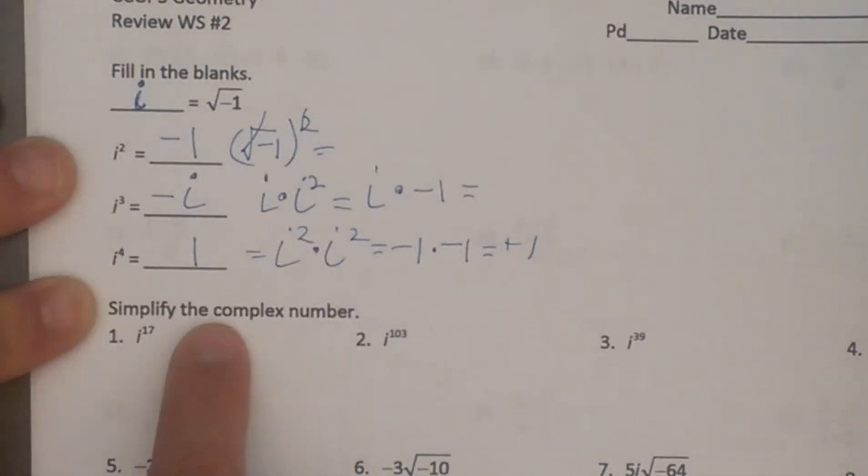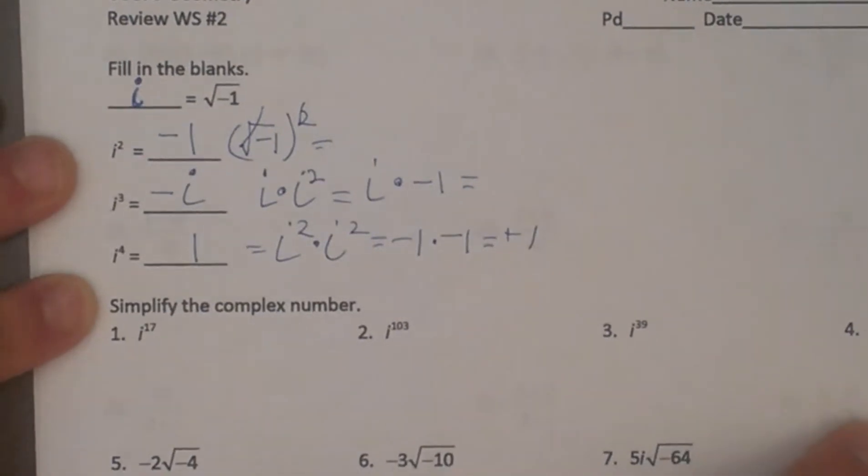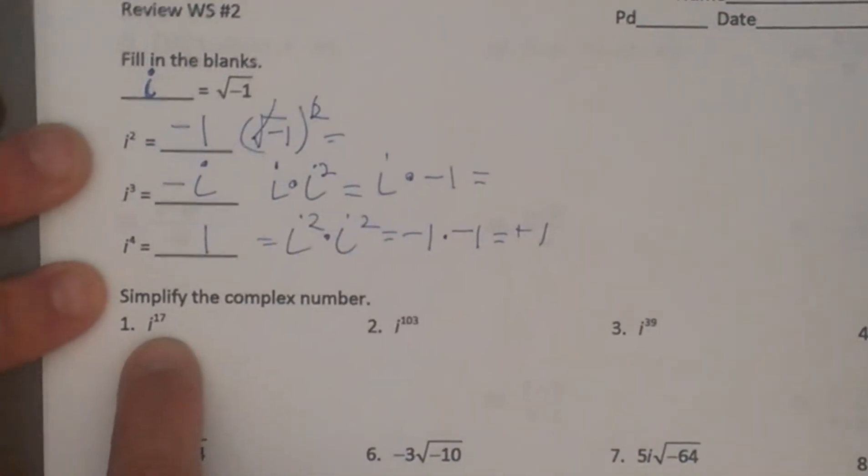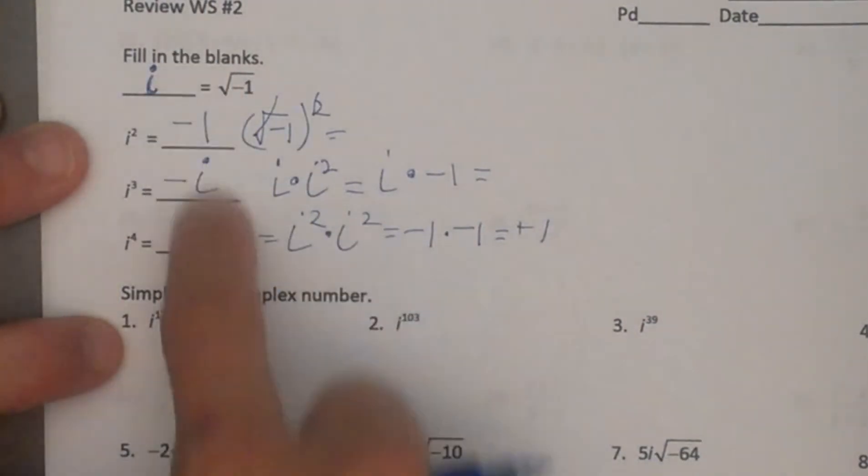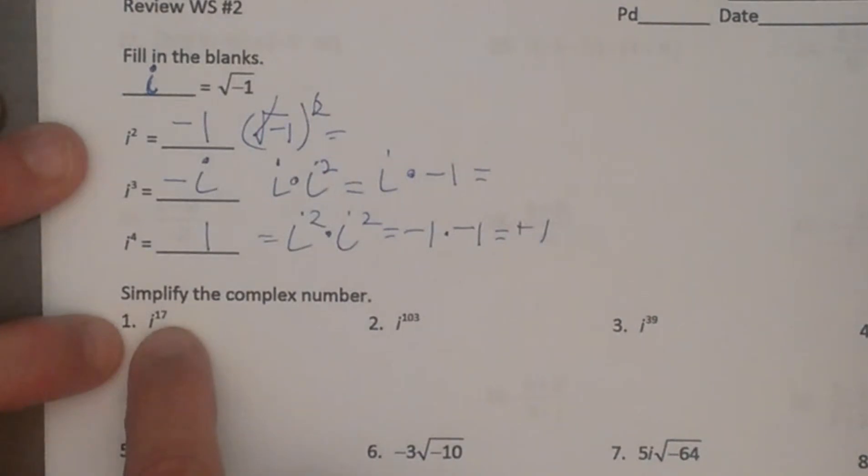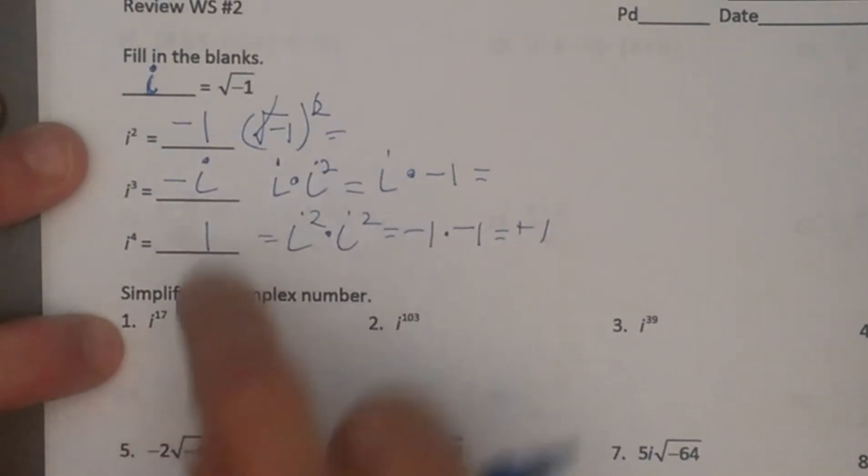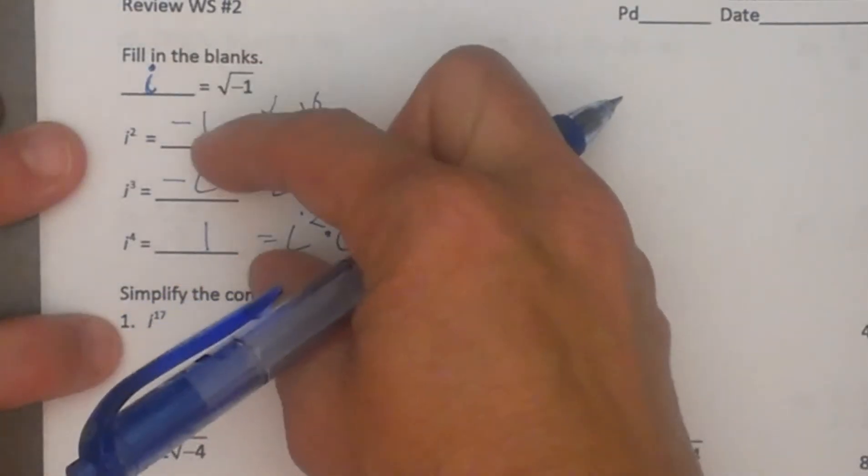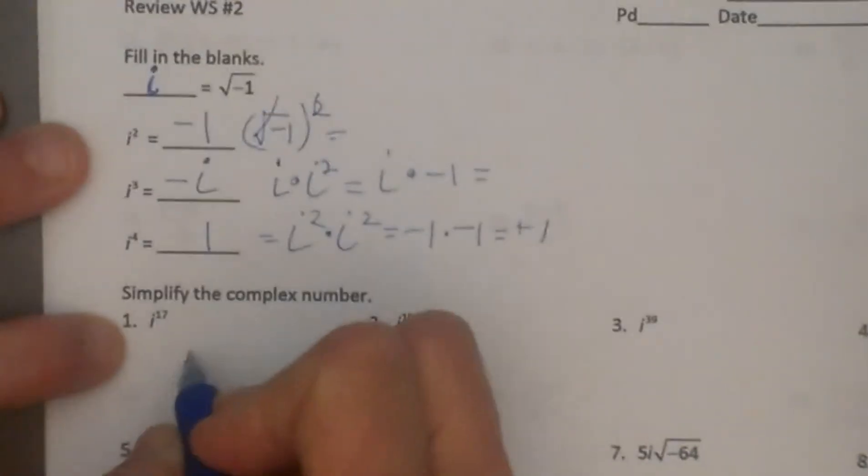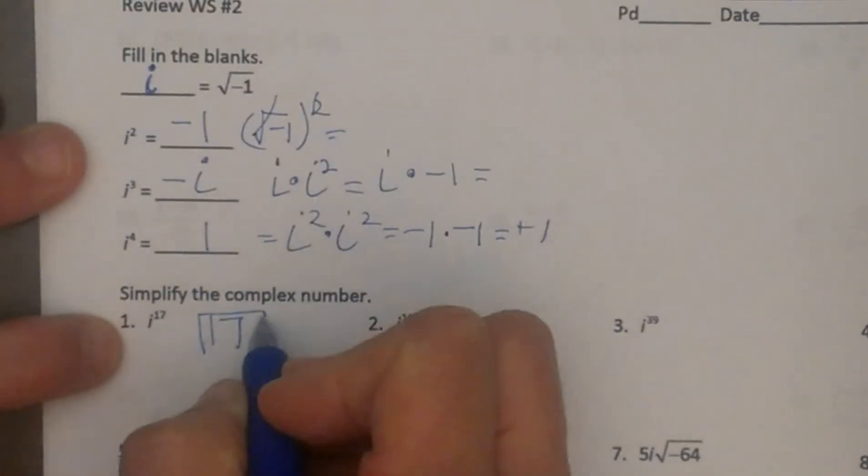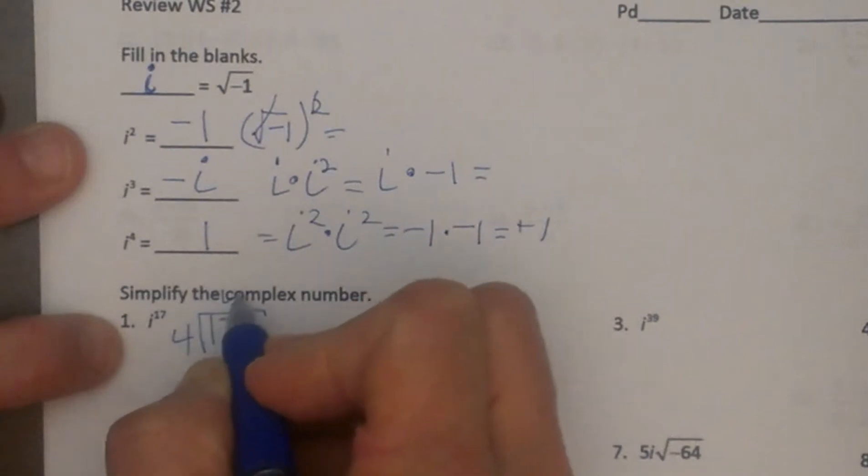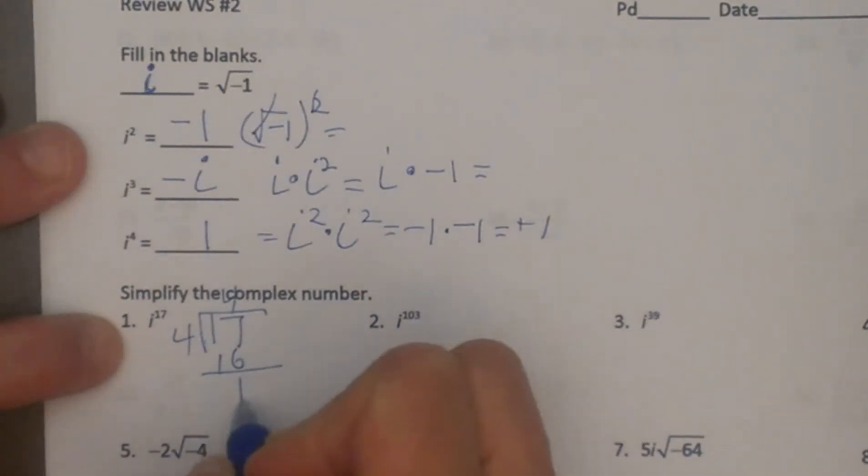So we are going to use this pattern of four to find the value of all these exponents of i. We could take i to the seventeenth power here and count through the pattern seventeen times, but we don't need to. What we need to do is take seventeen and divide it by four. You divide it by four because that's how many values there are in the pattern of i. We divide seventeen by four and we get a remainder of one.